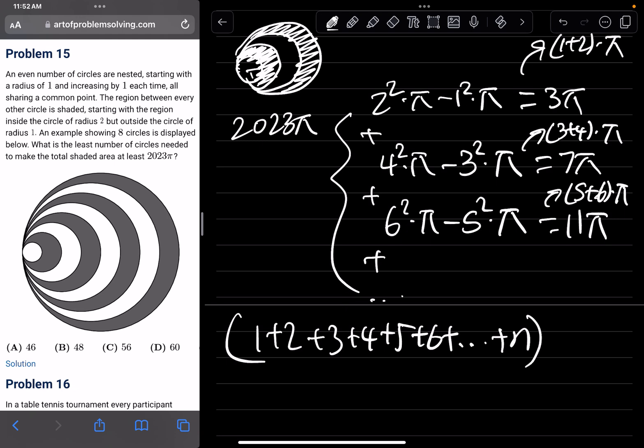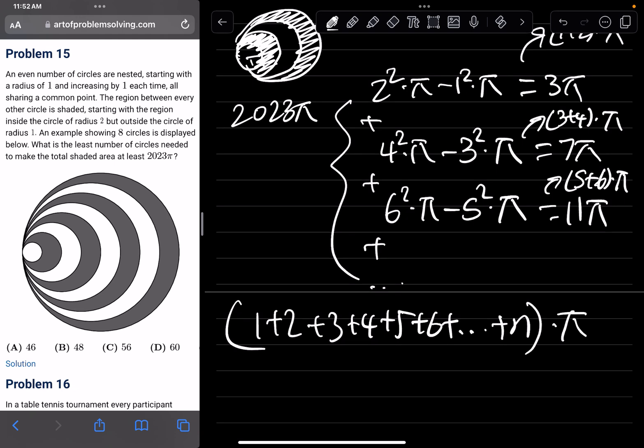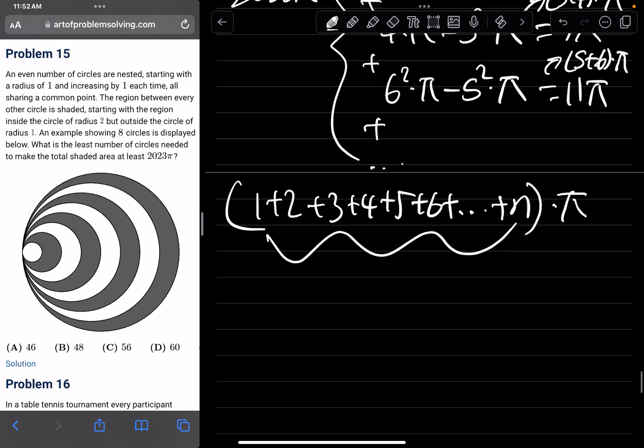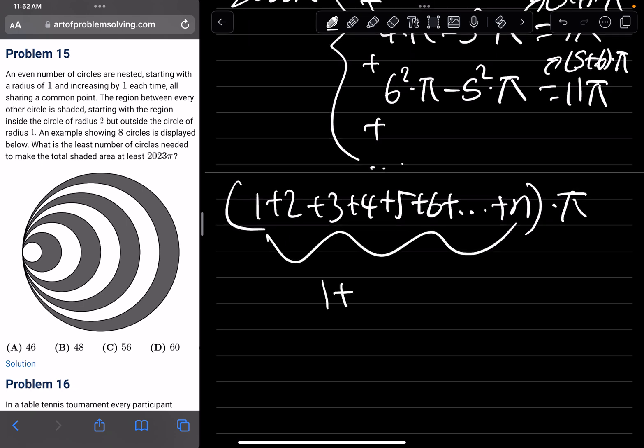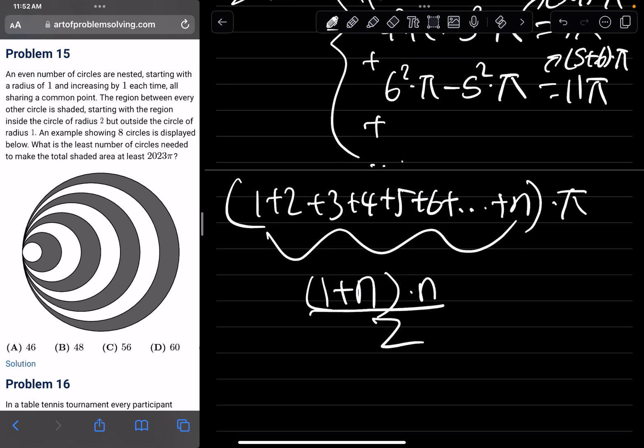And this summation formula could be rewritten as the first digit, which is 1, times our last number n, times how many numbers there are, which is n numbers, divided by 2. This is our summation formula.